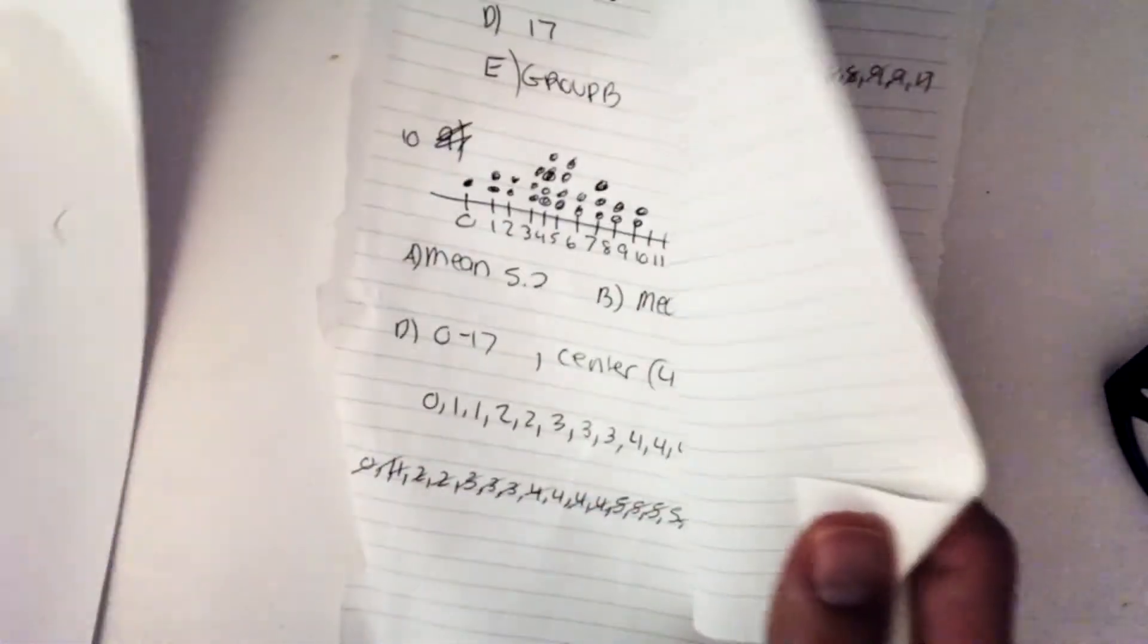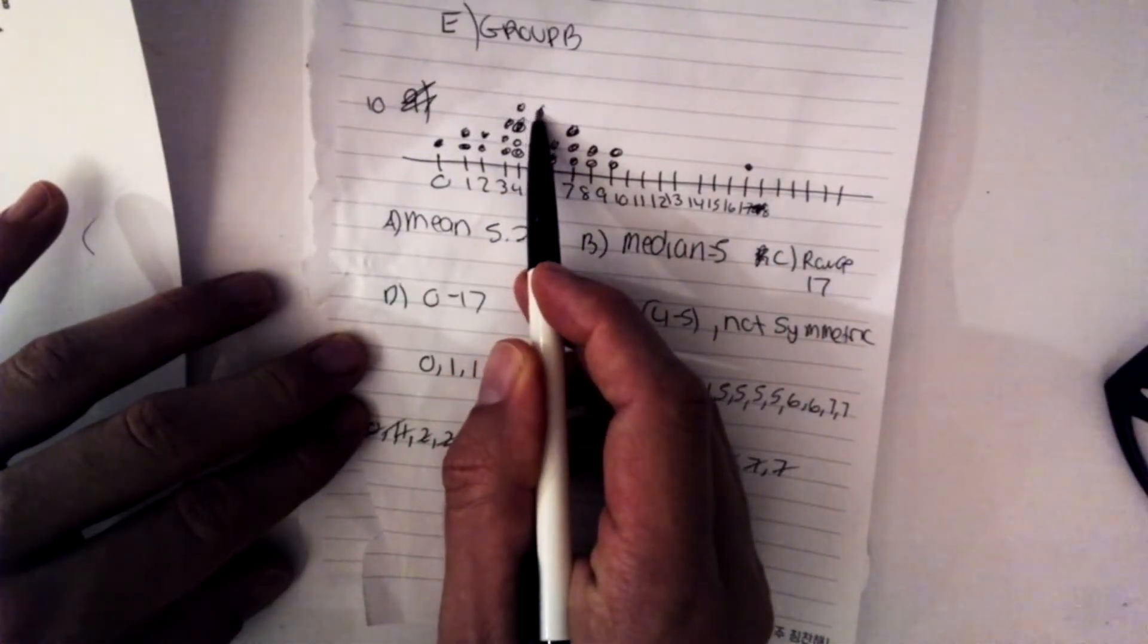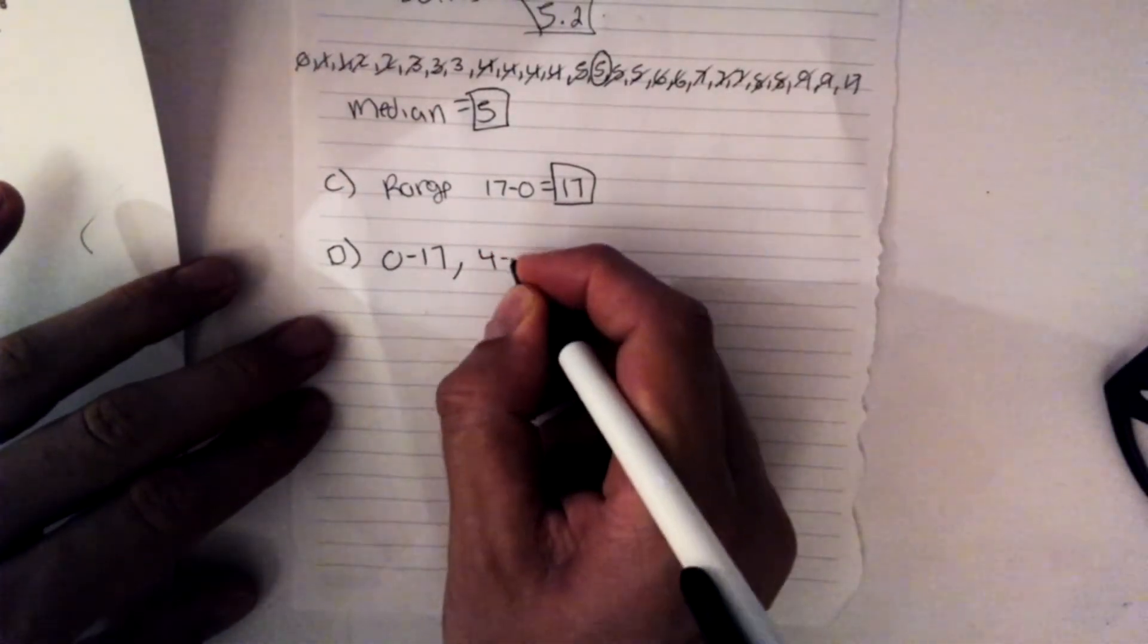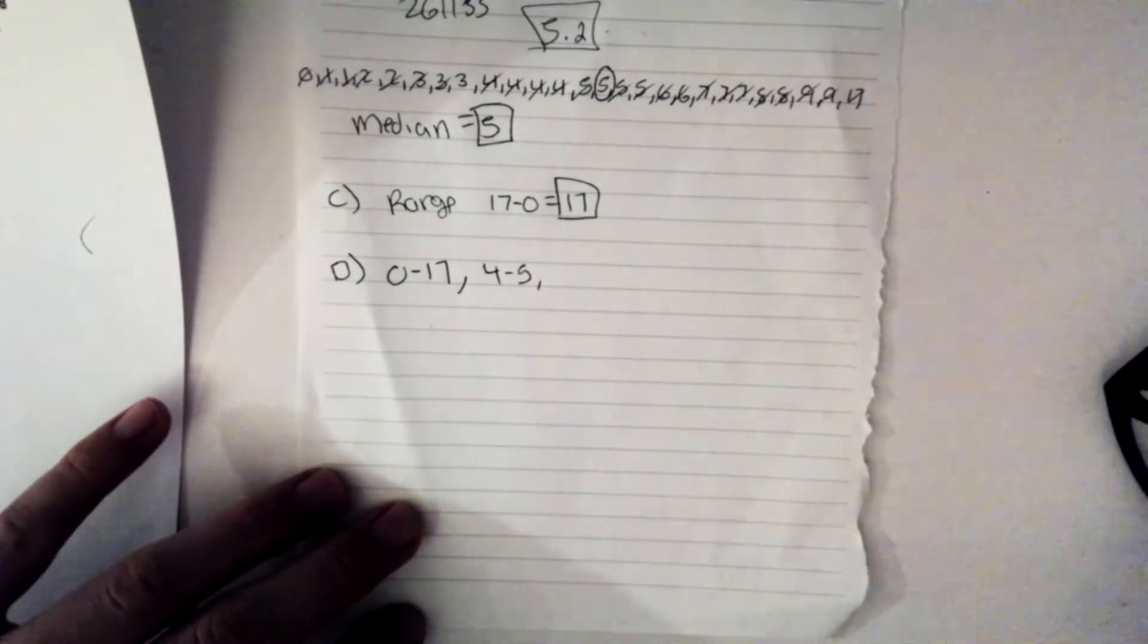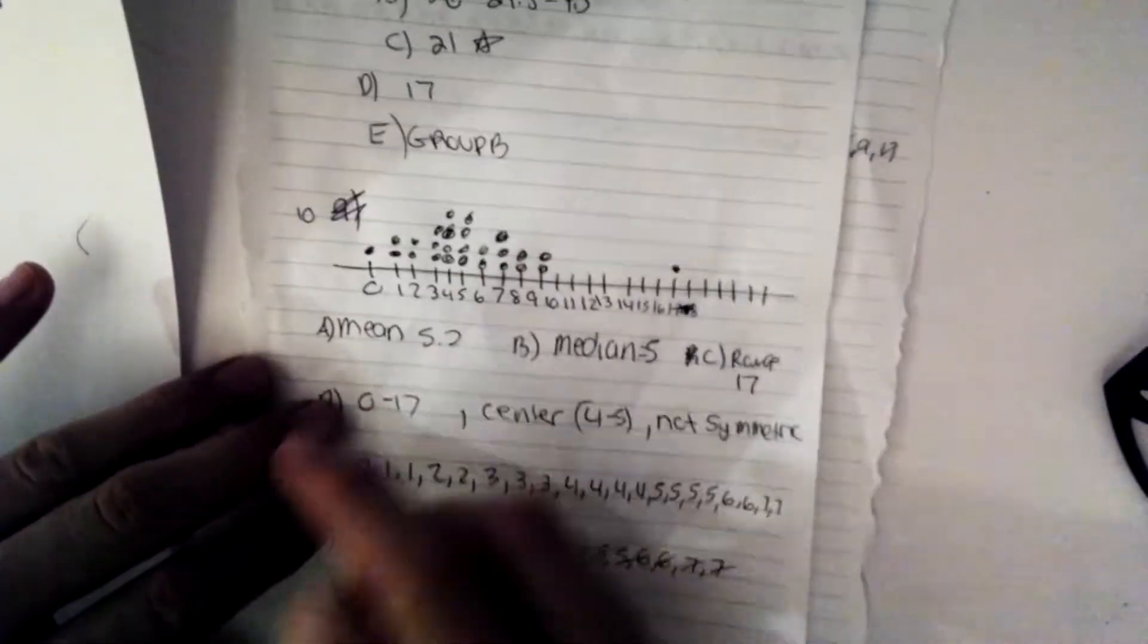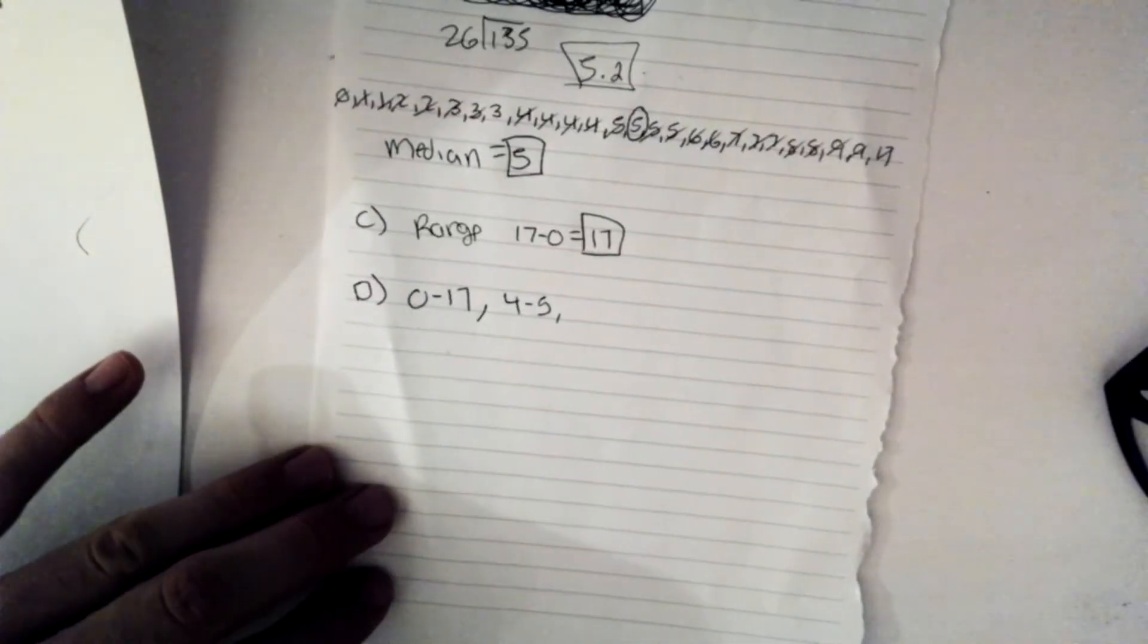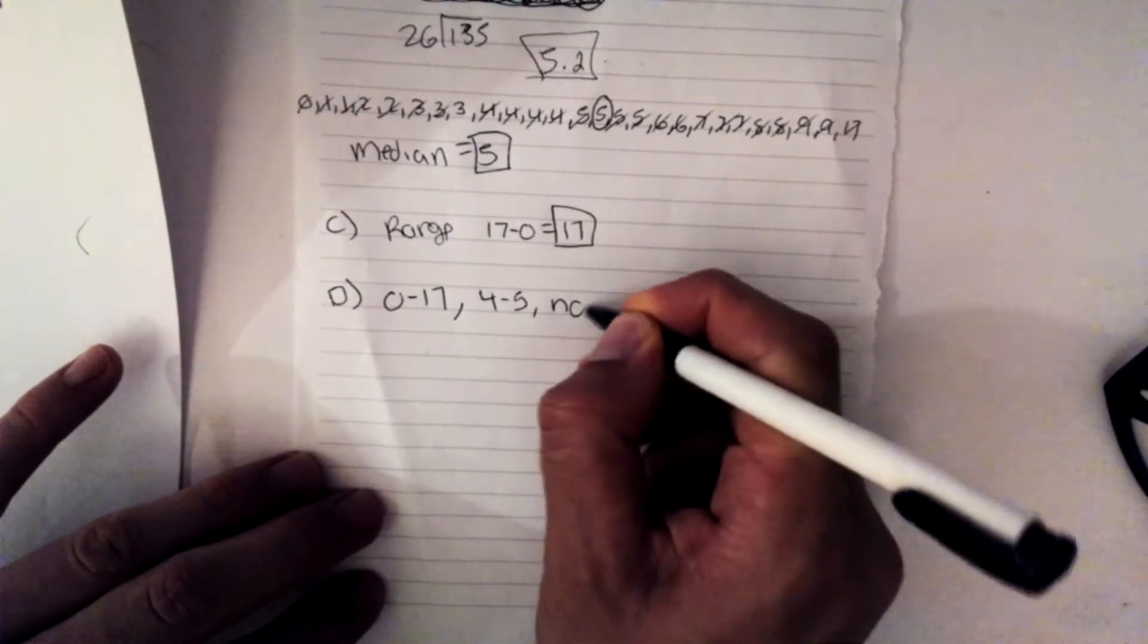The next part says to look for the center of the data. Well, if we look at our dot plot here, the center of our data is actually two numbers. So it's 4 and 5. And then it asks you what's the shape of our data. And we're looking for non-symmetrical. As you can see, that it does not make a nice, even bell curve there. Especially because that's 17. So we're looking for non-symmetrical or not-symmetrical.